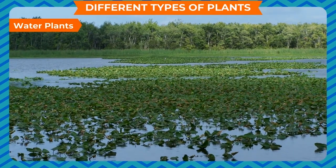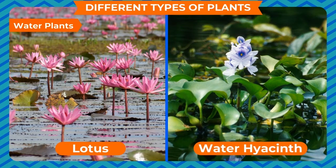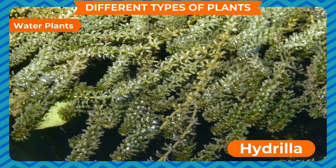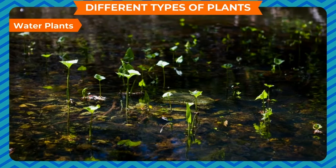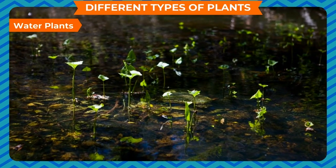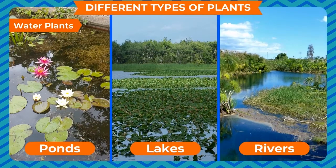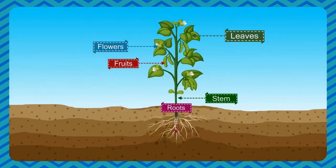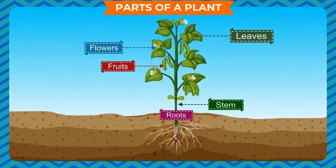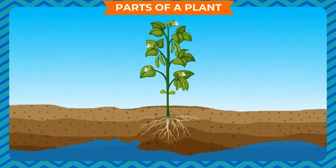WATER PLANTS: Some plants such as Lotus, Water Hyacinth, Hydrilla, etc. grow in water and are called Water plants. You can see them growing in ponds, lakes, and rivers.